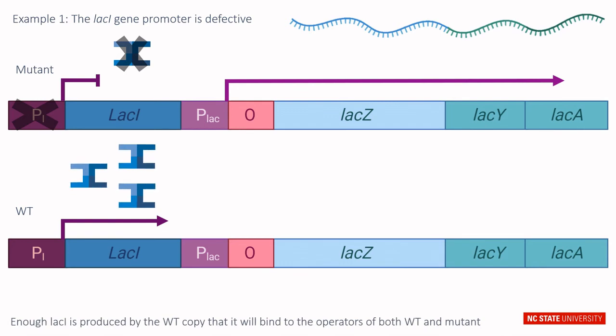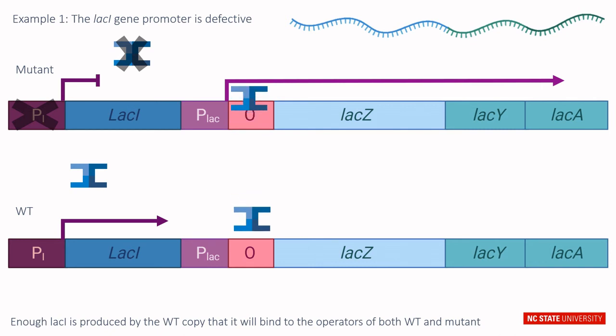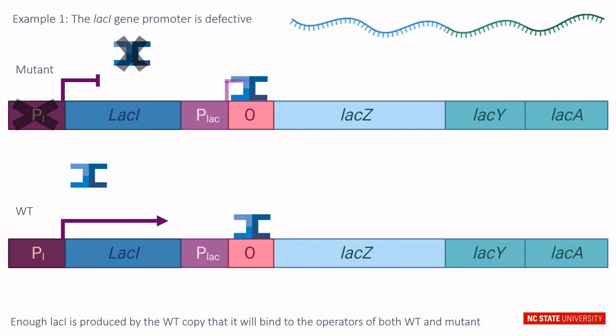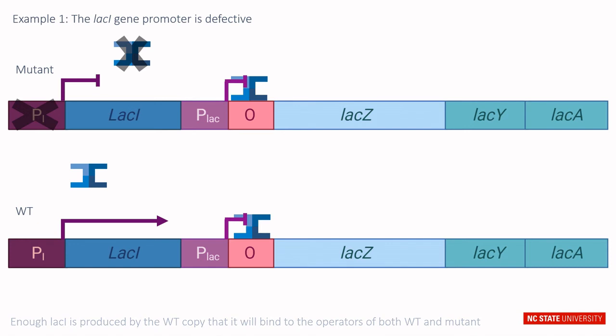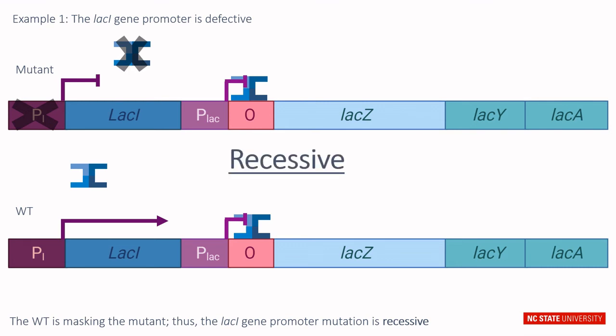There will be enough lac I produced by the wild type copy of the gene that the repressor lac I will bind to the operator of both the wild type and mutant copies of the lac operon. In this scenario, the wild type is masking the mutant. Thus, the lac I gene promoter mutation is said to be recessive.